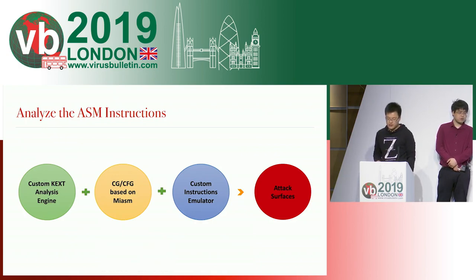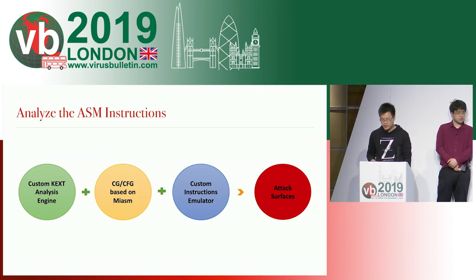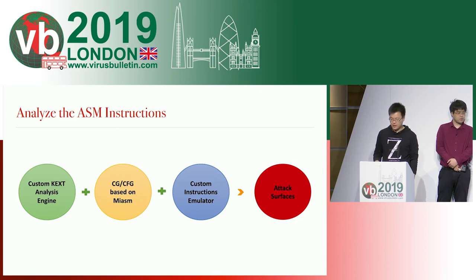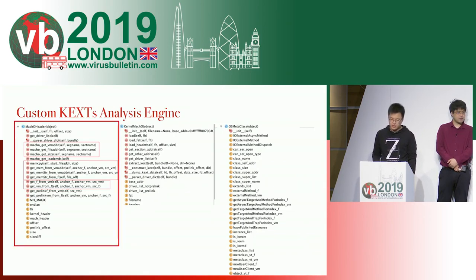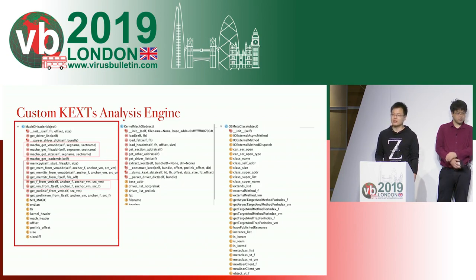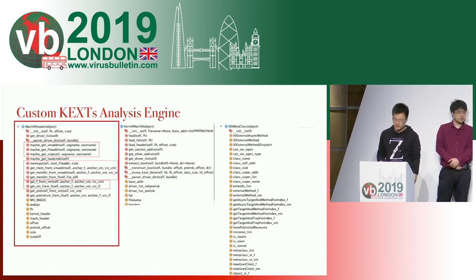For assembly instruction analysis, we customize an extension analysis agent and instruction emulator. What's more, we use Miasm to generate CFG and guide the instruction emulator to analyze critical paths. Eventually, it can help us to generate the attack surface automatically. Here is our implementation. The first three functions are used to search the virtual and file address for each segment and section. The next four functions are used to get memory content or stream for a given class. The following two functions are used to transfer between virtual address and file address.